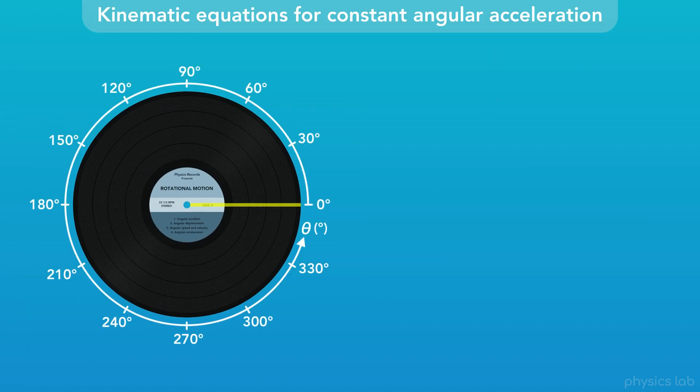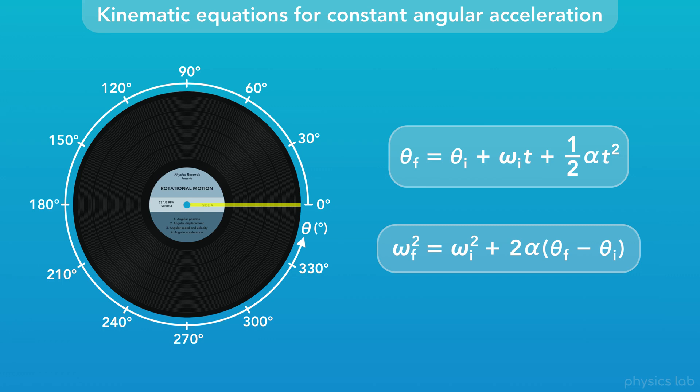Before we wrap up, it wouldn't be a kinematics lesson without the last two kinematic equations that we can use when an object has a constant angular acceleration. These two equations are the same ones from linear motion and circular motion.